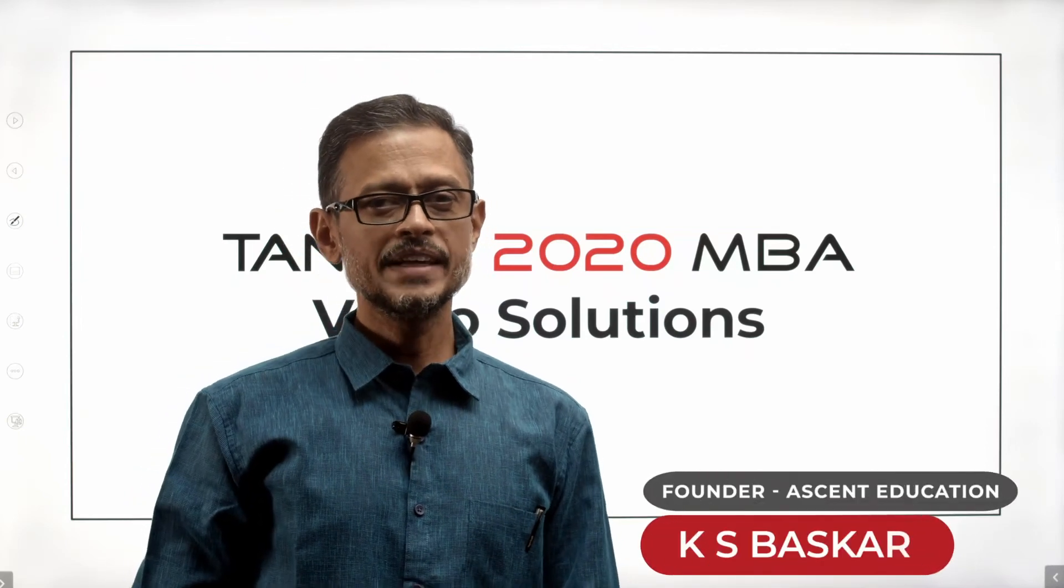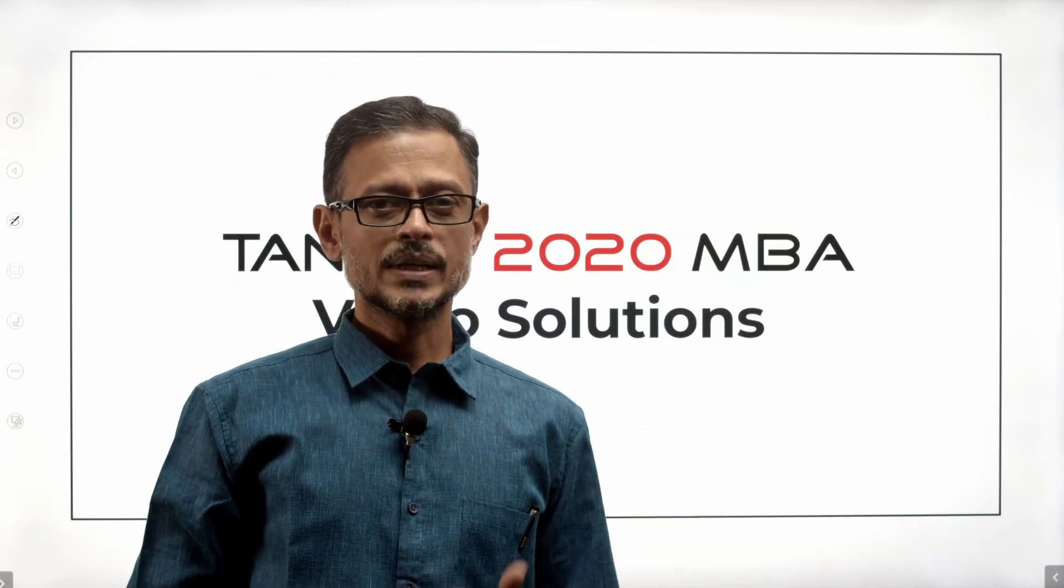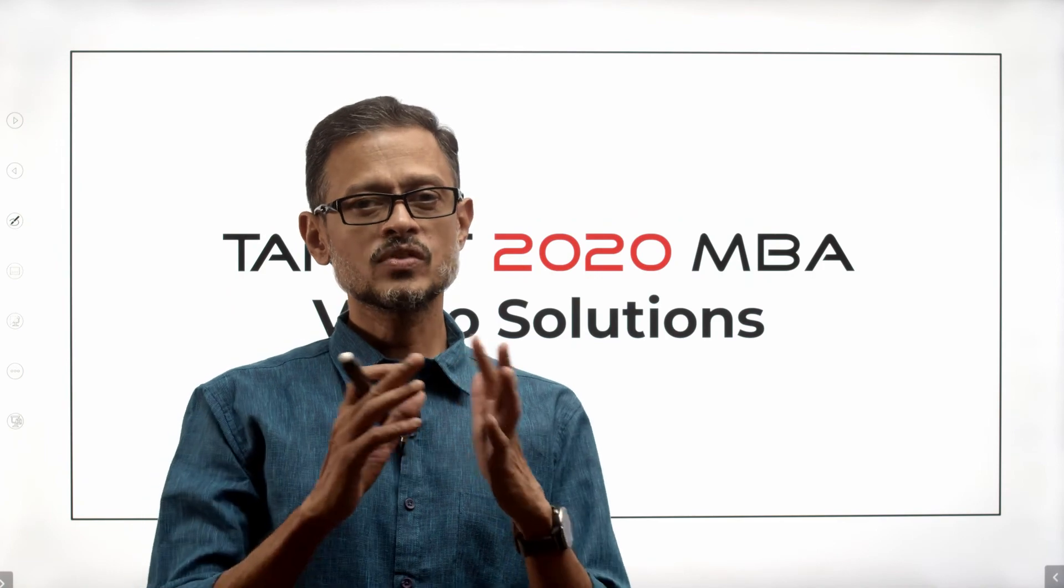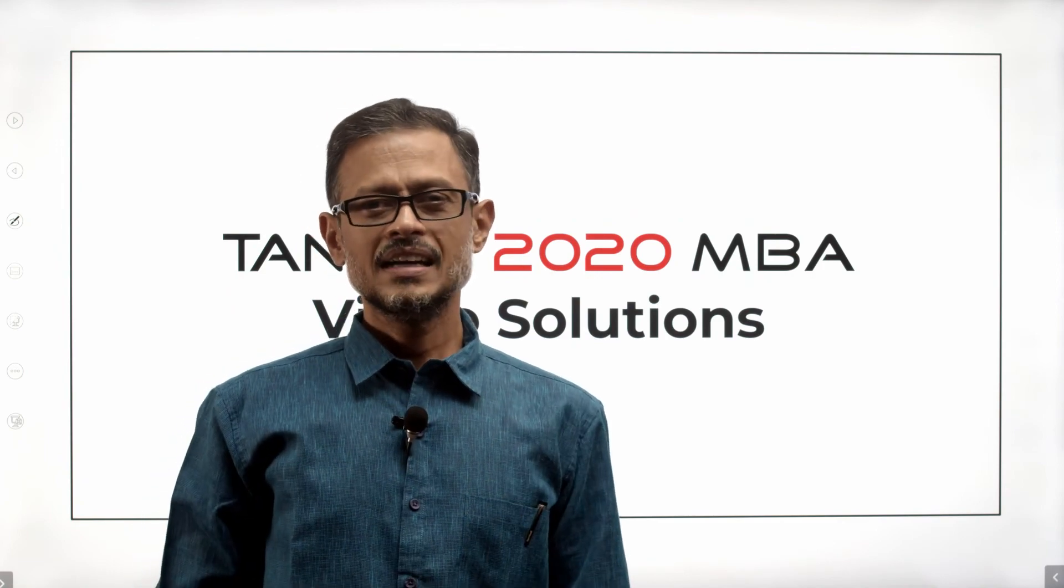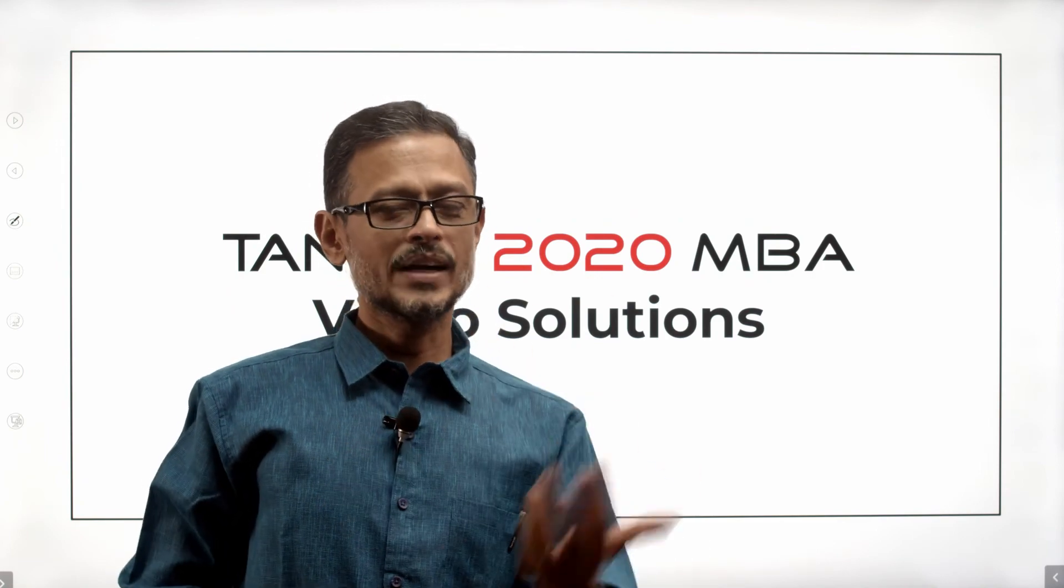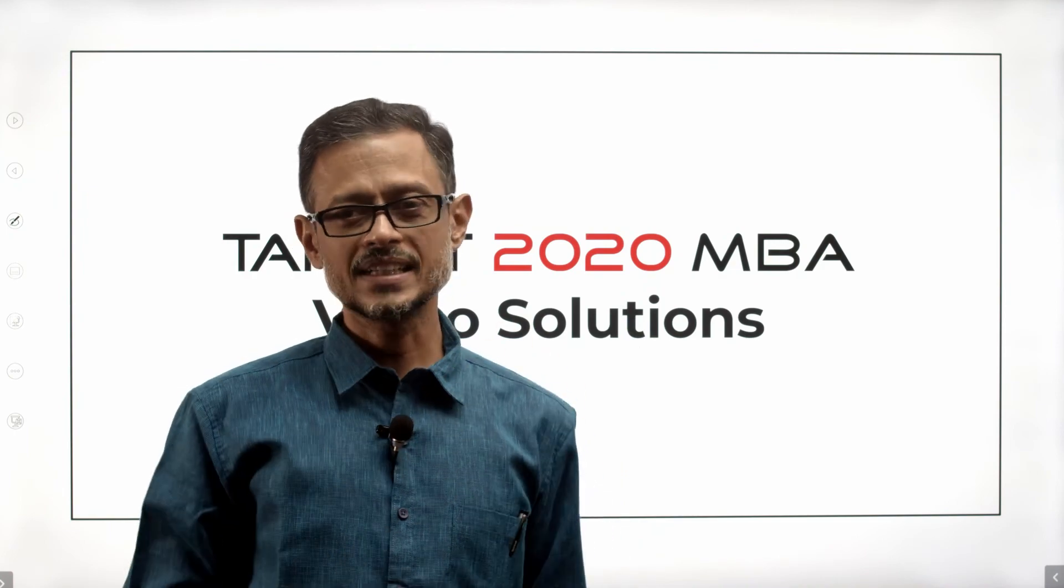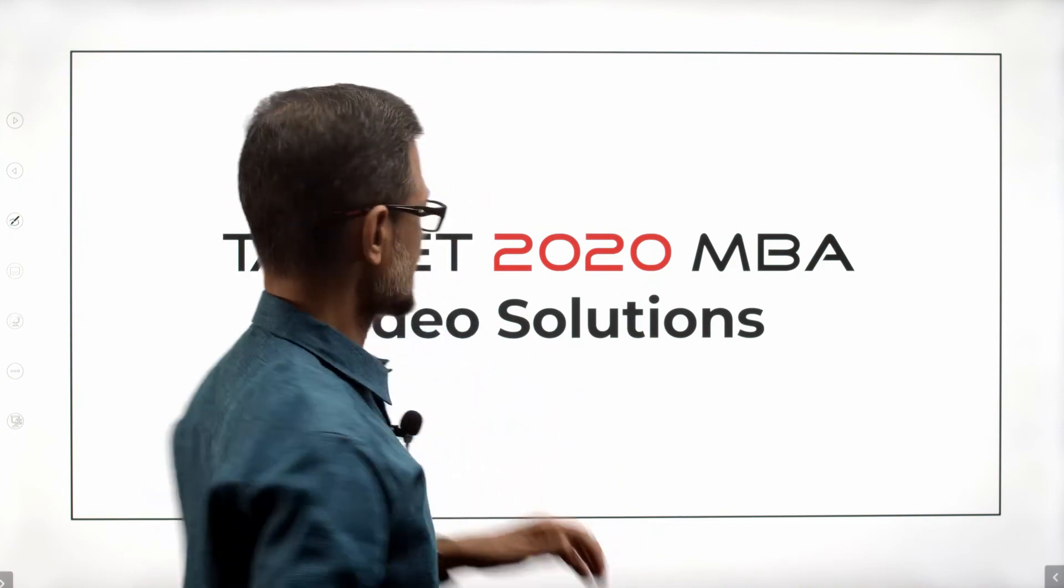Hi everyone, TANCET 2020 MBA question paper video solution. This is a data sufficiency question from the chapter arithmetic progression and a little bit of sum of squares of numbers, number properties. Very interesting question. Let's get started.